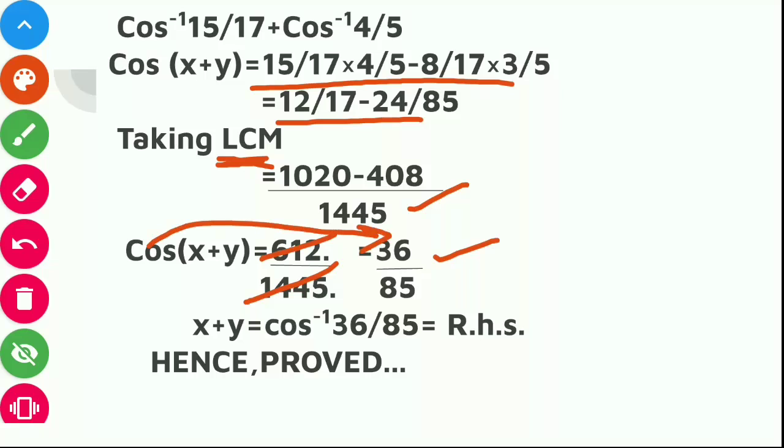So cos will move that side, it will become x plus y is equal to cos inverse 36 by 85, which is equal to our right hand side. Hence, we have proved that left hand side is equal to right hand side.